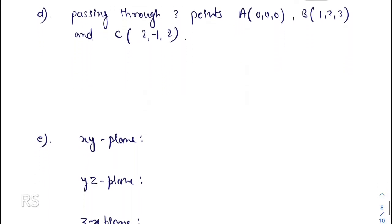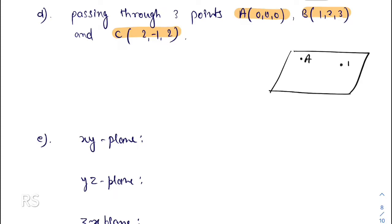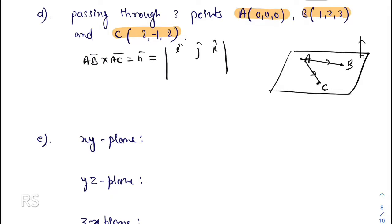This is another question: find the equation of the plane passing through three points A, B, and C. In order to find the normal vector, we join A to B and A to C to get vectors AB and AC. Then the normal vector is AB × AC. The point can be any of A, B, or C. We then write r minus a dot normal vector equals zero.